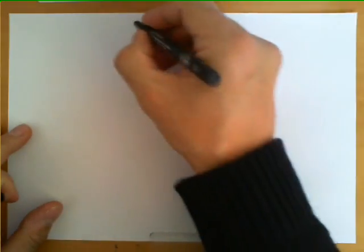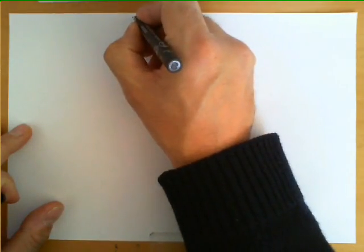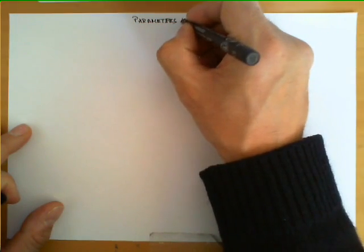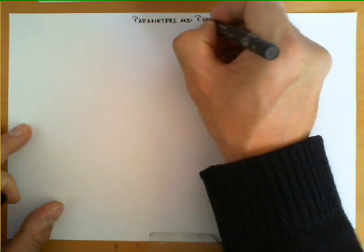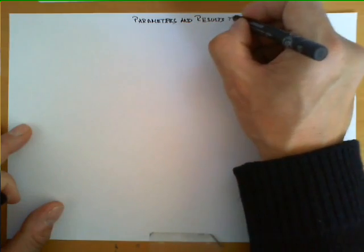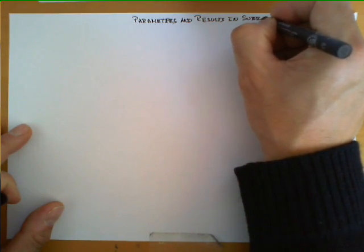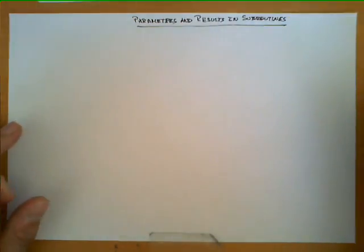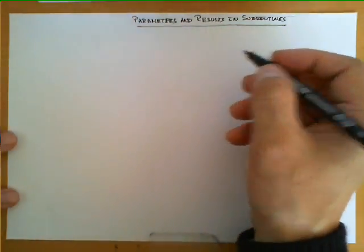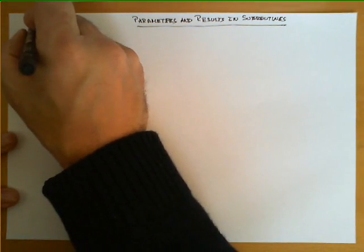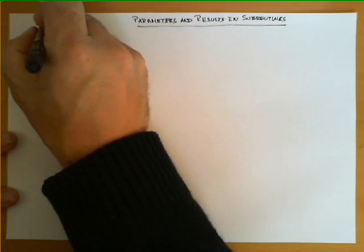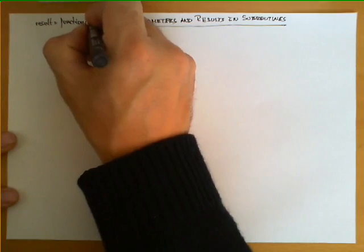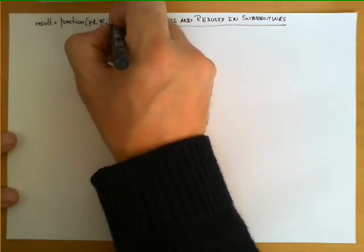In this video, we're going to explain how to pass parameters and return results in subroutines. The assumption is that we're going to implement a mechanism similar to what a high-level programming language would implement when invoking the following line: result equal to function of p1, p2, p3.